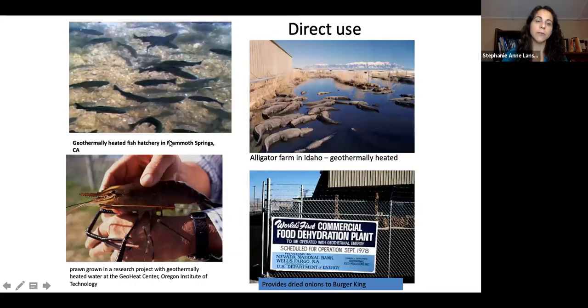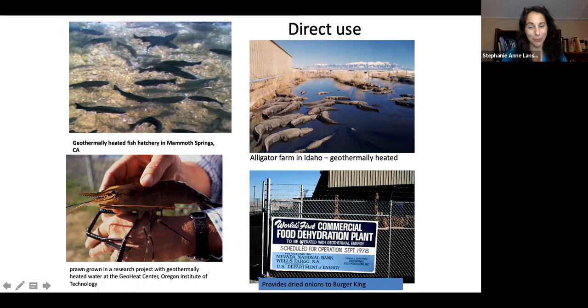You can also heat fish hatcheries. Here's a fish hatchery in Mammoth Springs, Colorado that is heated, and prawns grown in Oregon through fish hatcheries. We have an alligator farm in Idaho geothermally heated, and a commercial dehydration plant that dries onions for Burger King using geothermal heat and steam.